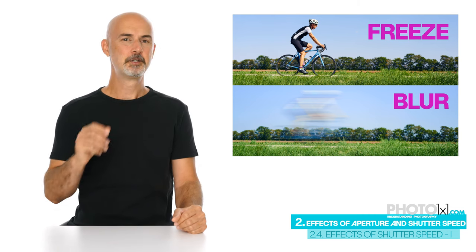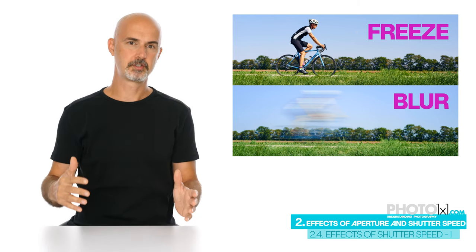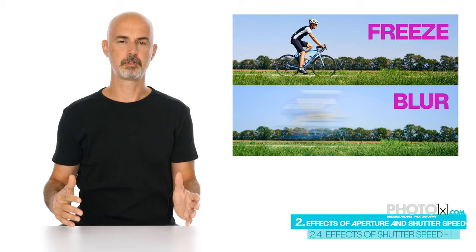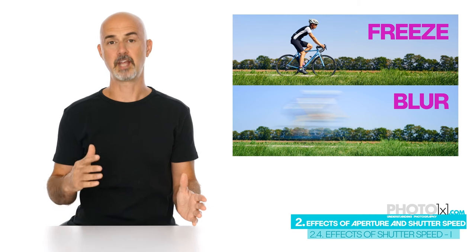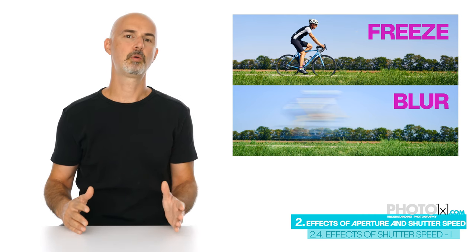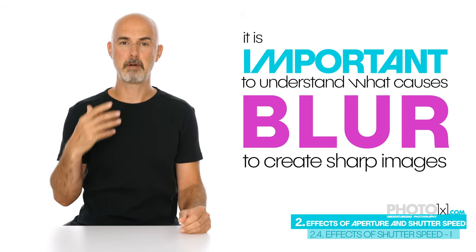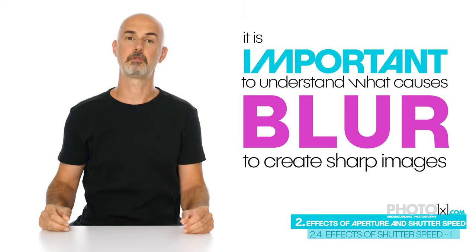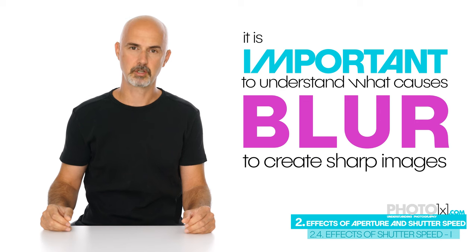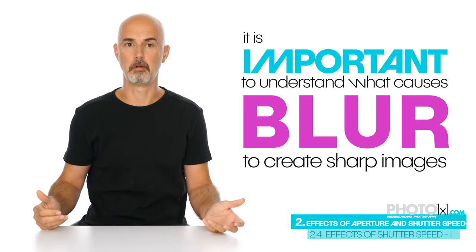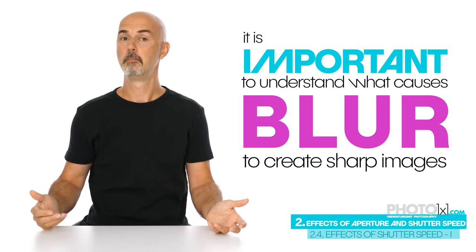To better understand, I'll first explain what causes the blur in our second image, and after that we will deal with freezing the action of our first image. It is much easier to understand how to freeze action when you know what causes blur. Let's make another experiment.